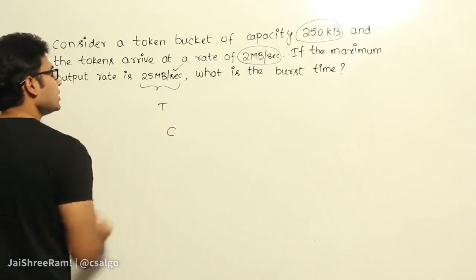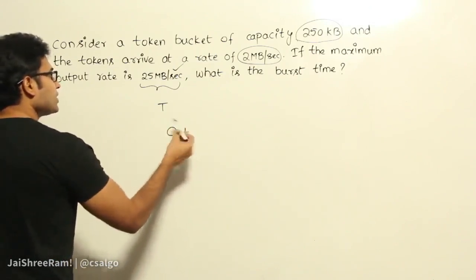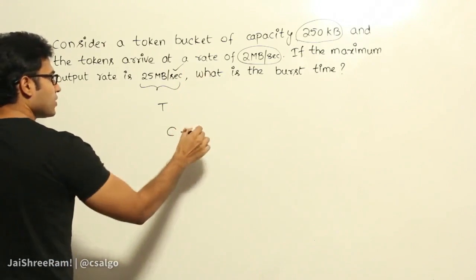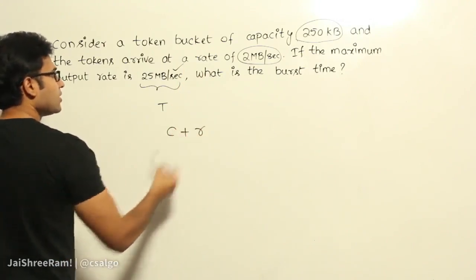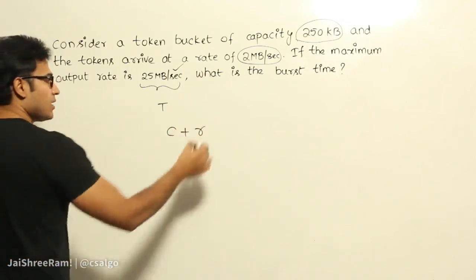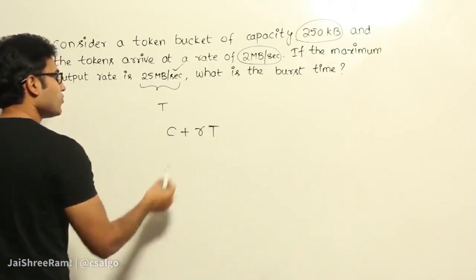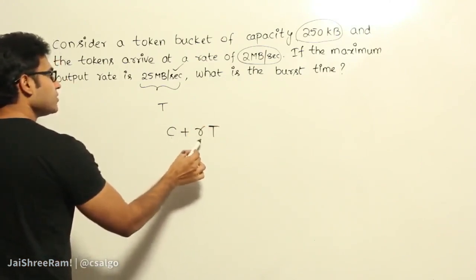Initial capacity I could send, plus what is the rate at which the tokens are coming in? Let us say R is the rate at which the tokens are coming in. And in T time, these many tokens will come. Therefore, you will be able to send these many bytes.